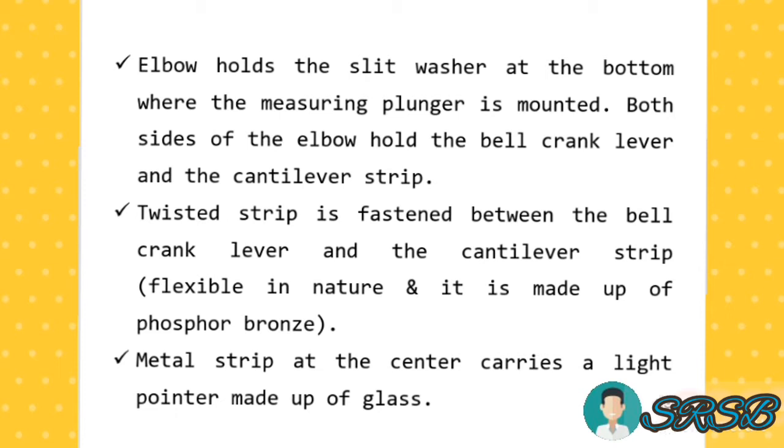When the component has to be checked, the bell crank lever will move to the left and right side directions. Based on that, we can notice the value on that particular scale. The twisted strip is fastened between the bell crank lever and the cantilever strip.